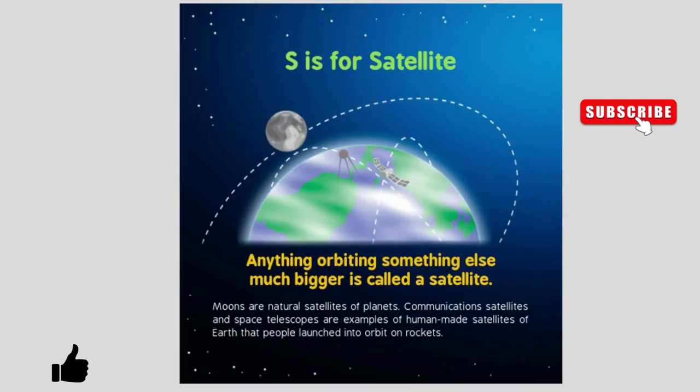S is for Satellite. Anything orbiting something else much bigger is called a satellite. Moons are natural satellites of planets. Communication satellites and space telescopes are examples of human-made satellites of Earth that people launch into orbit.